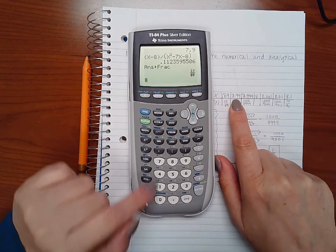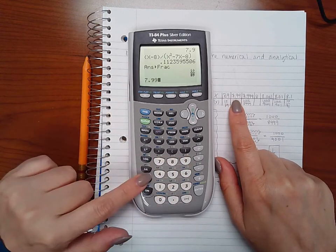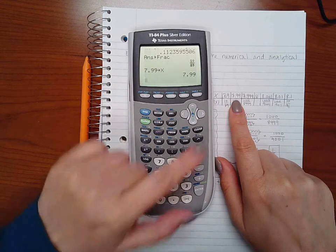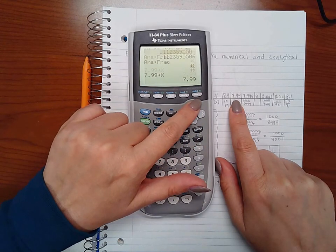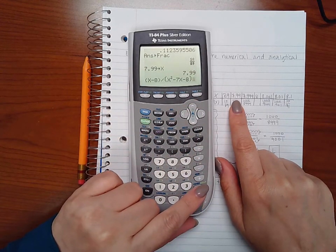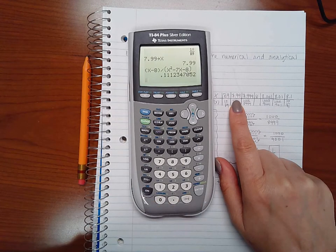Now we're going to move to the next one, 7.99, store as x. Hit enter, highlight my function again, there it is, hit enter, copy it, hit enter to plug in 7.99.